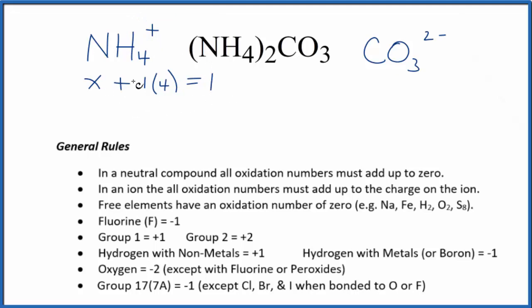Now we just solve for x. x + 4 = 1, subtract four from each side, and x = -3. So the oxidation number here on the nitrogen is -3, and we know each hydrogen has a +1.